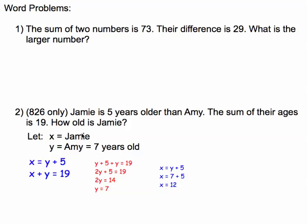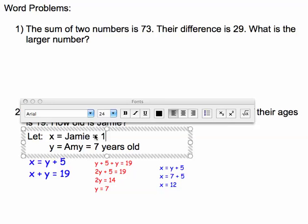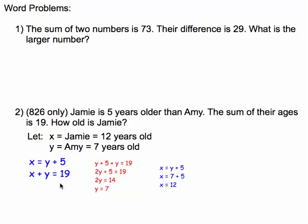So I think that Jamie is 12 years old. But before I can confirm that as my answer, let me check using what the word problem says. Jamie is five years older than Amy. That is true. Twelve is five more than seven. And the sum of their ages is 19. Twelve plus seven is 19. Therefore I know I'm correct.